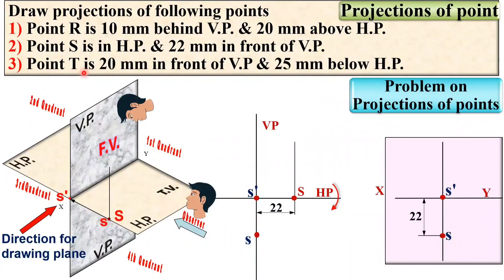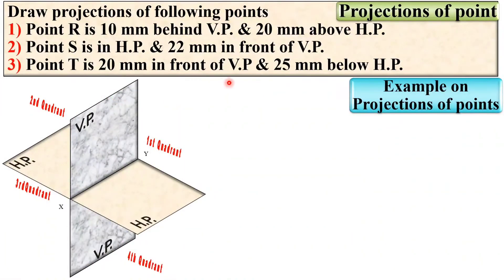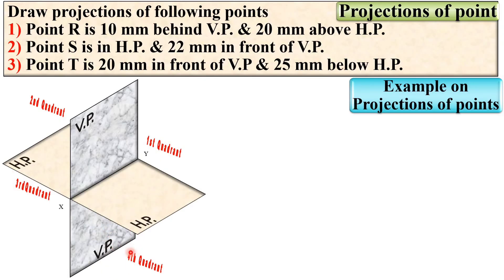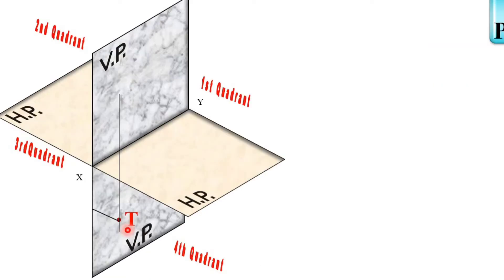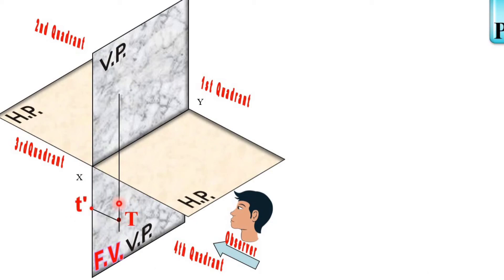Now the last point T: it is 20 mm in front of VP and 25 mm below HP. In front of VP means it can be in first quadrant or fourth quadrant, and 25 mm below HP means it is in the fourth quadrant. Locating point T — 20 mm in front of VP and 25 mm below HP — gives us the position of point T. For the front view you can see T dash on the VP, and for the top view you can see T on HP.